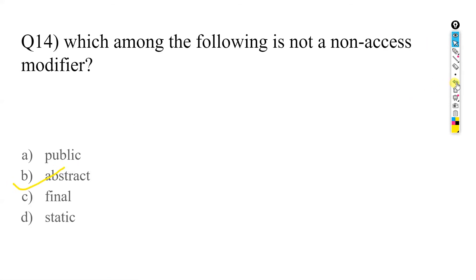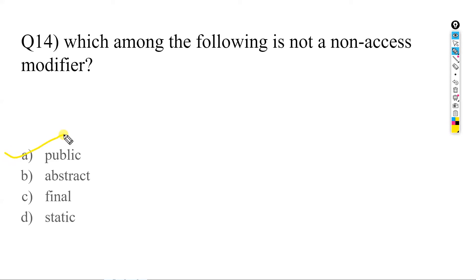Which among the following is NOT an access modifier — meaning, which is a non-access modifier? The options are public, abstract, final, and static. The answer is A — public is an access modifier. Abstract, final, and static are non-access modifiers in Java.